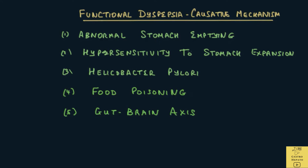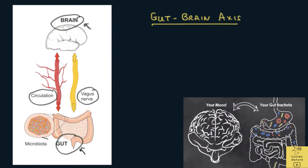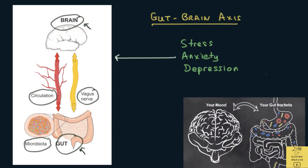Another factor could be an abnormality in the gut-brain axis. The gut-brain axis is a bi-directional communication system between the gut — which includes the stomach and intestines — and the brain, through nerves, blood circulation, and gut bacteria. Some patients who suffer from stress, anxiety, and depression seem also to suffer from functional dyspepsia, through this gut-brain axis. What happens in the brain affects the stomach and intestines, and vice versa.